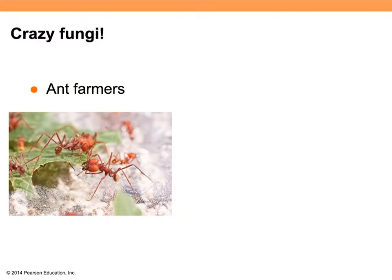Humans are not the only farmers out there. Leaf-cutter ants go out and harvest pieces of leaves, bring them back to special chambers inside their nests, and grow a fungus on them. This fungus has become so domesticated that you don't find it out in nature anymore — it's only found in these ant farms.